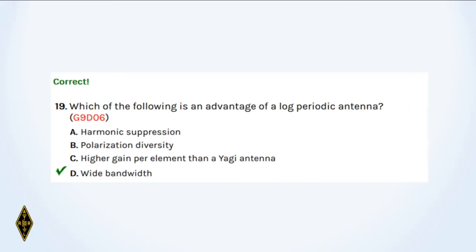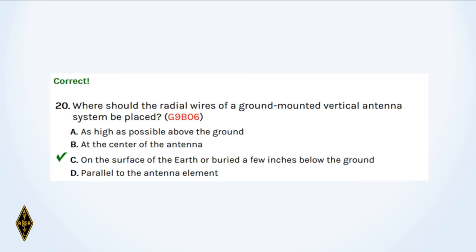And nineteen: Which of the following is an advantage of a log periodic antenna? It's a wide bandwidth antenna, continuously covering a wide range of frequencies. Some tri-band ham radio antennas cover 20 meters, 15 meters, and 10 meters only on those bands, but a log periodic will cover continuously all the way. And 20: Where should the radial wires of a ground-mounted vertical be placed? On the surface of the earth or buried just a few inches below.